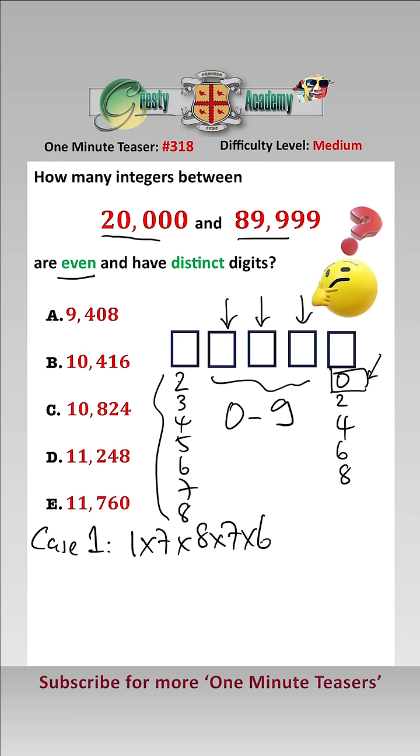Case 2 is if it ends in 2, 4, 6, or 8, and we have an even number to start with. Then basically there are 4 choices here, times even number...